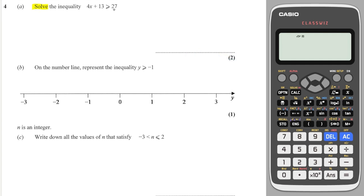Question 1 says solve this inequality. Now we're just going to treat it like an equation. So we're going to subtract 13 from both sides. This will give me 4x, these two will cancel, greater than or equal to 14. And then I'm going to divide both sides by 4. And this will give me x is greater than or equal to 7 over 2. Great, so that's my answer. x is greater than or equal to 7 over 2.